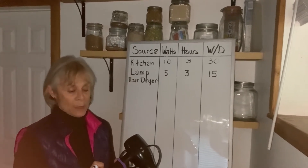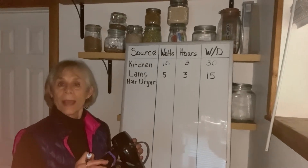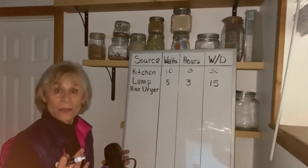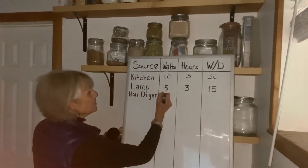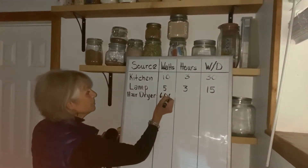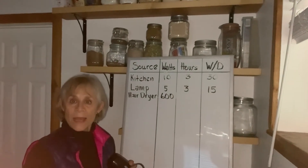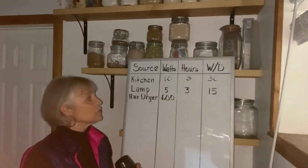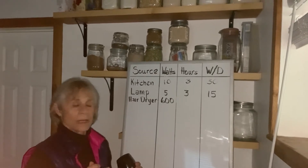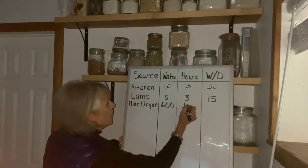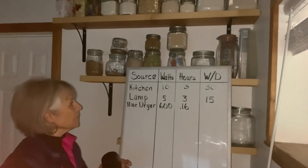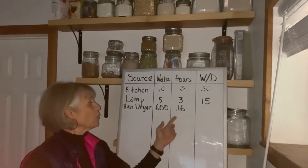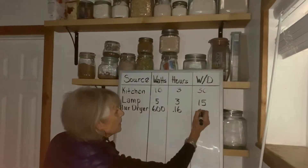Let's use my hairdryer as an example. This hairdryer uses 1,800 watts, but I don't use it every day — maybe once every three days. So I'll divide 1,800 by 3, which gives me 600 watts. I use it maybe 10 minutes a day, so I have to convert that to a fraction of an hour by dividing 10 by 60, which gives me 0.16. To get the wattage per day I multiply 600 watts times 0.16 hours and I get 96 watts per day.